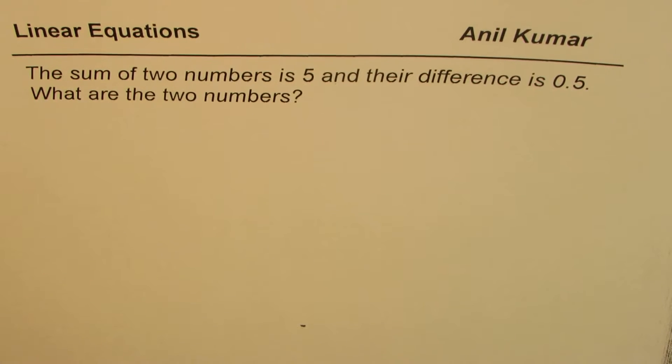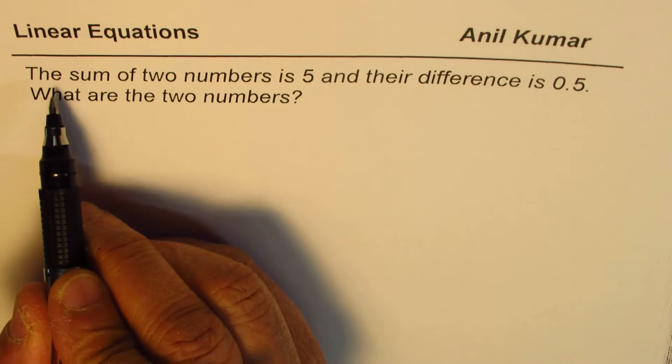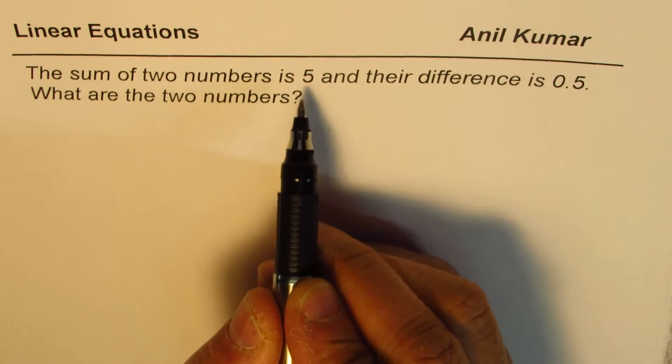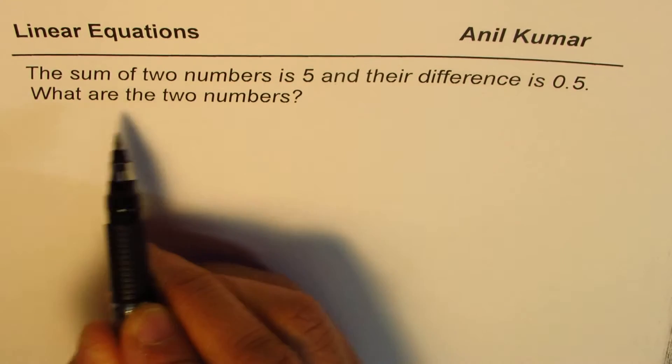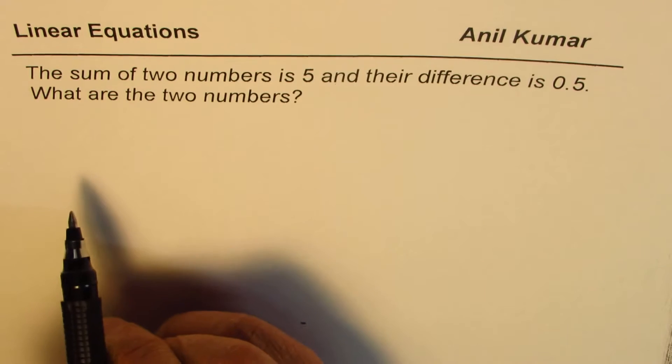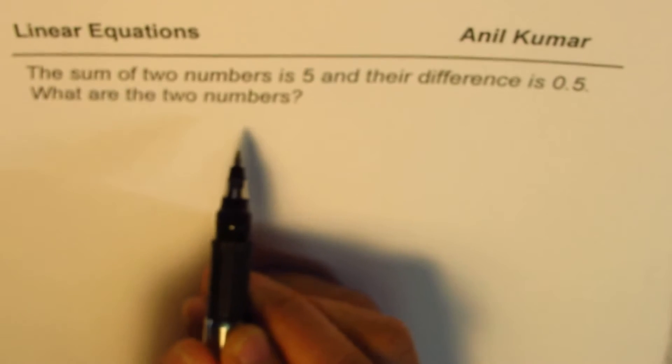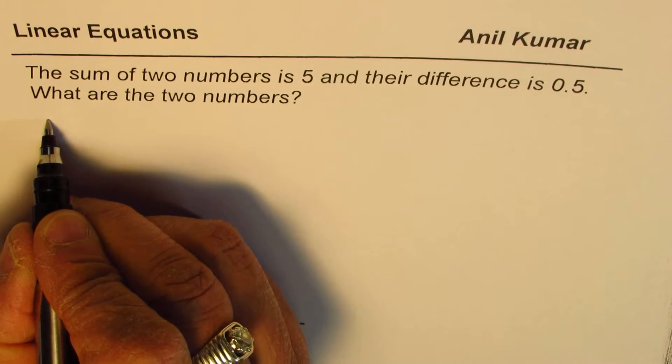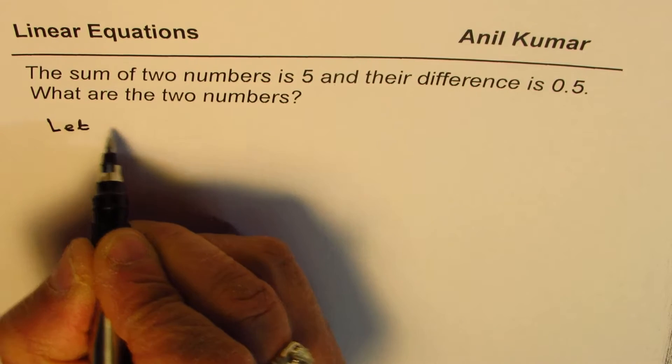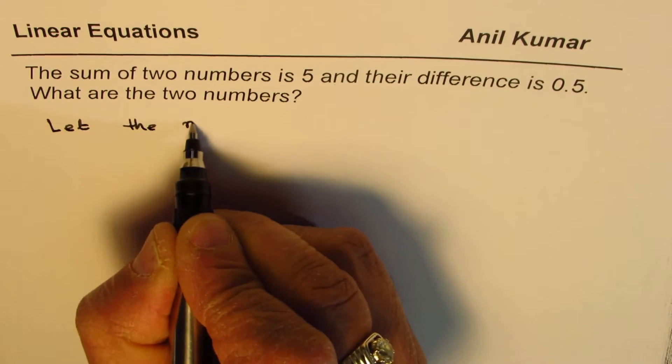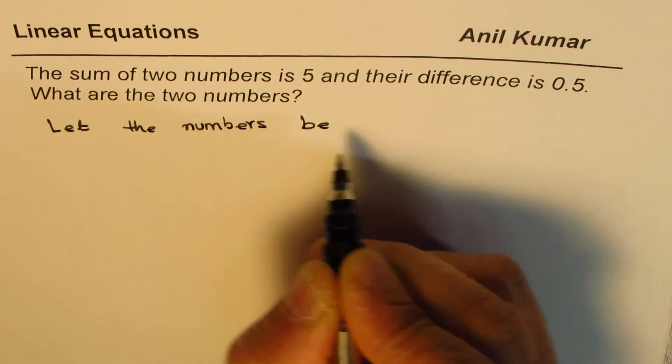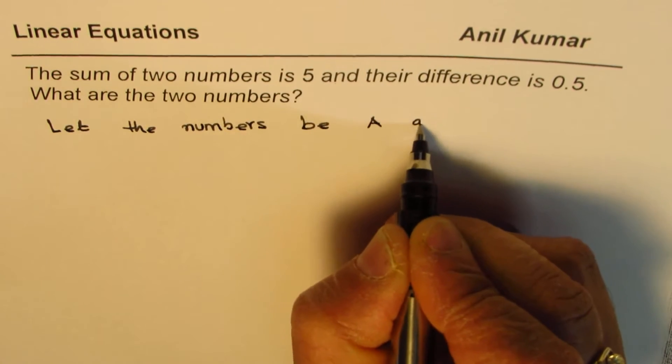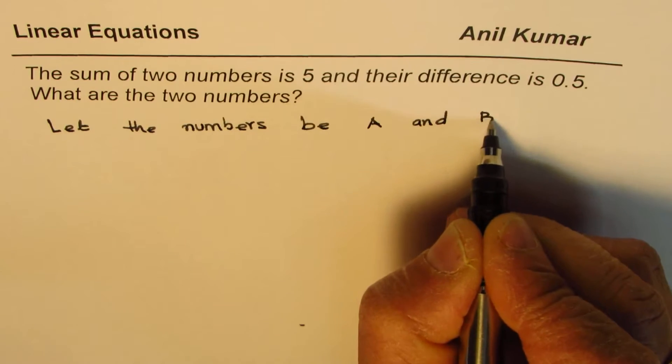The question here is based on linear equations. The sum of two numbers is 5 and their difference is 0.5. What are the two numbers? So whenever you have a word problem, it's good to define variables. Let's say let the numbers be A and B. So these are my two numbers.